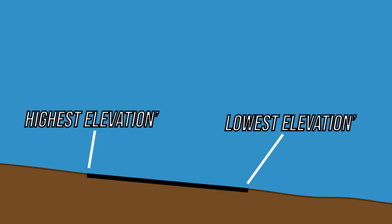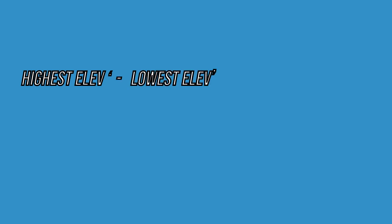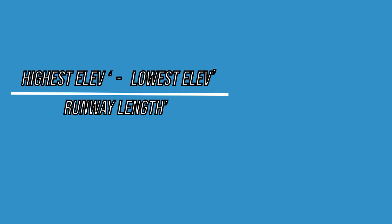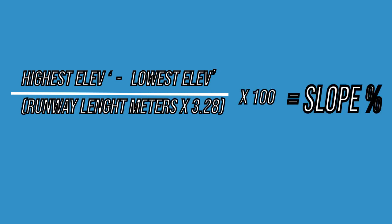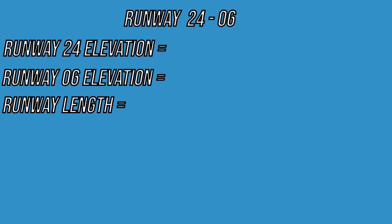In order to calculate runway slope we have to look at both of the runway threshold elevations in feet. We take the highest elevation and subtract the lowest elevation from that, then divide the difference by the runway length in feet. If the runway length is expressed in meters, we multiply it by a conversion factor of 3.28. As the slope is expressed in percentages, we then multiply this value by 100.